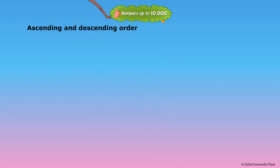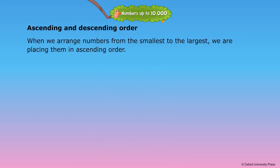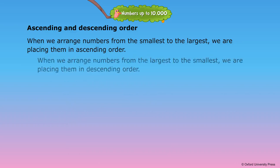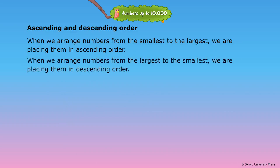Ascending and descending order. When we arrange numbers from the smallest to the largest, we are placing them in ascending order. When we arrange numbers from the largest to the smallest, we are placing them in descending order.